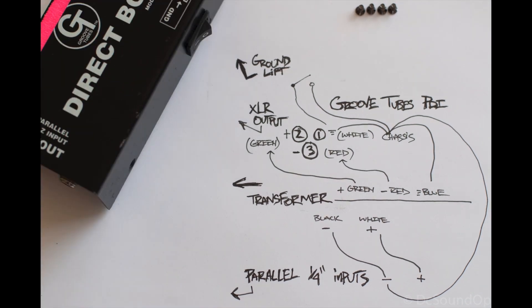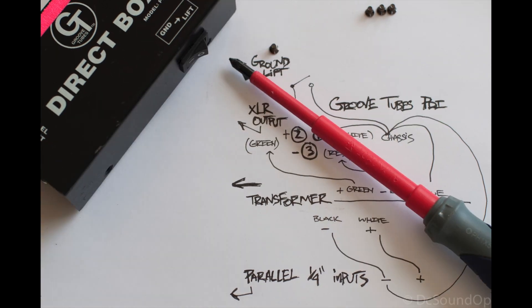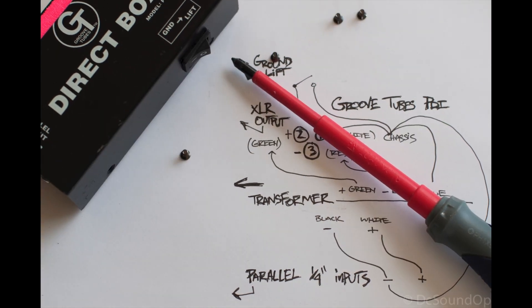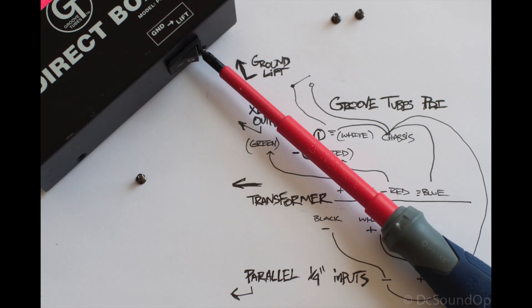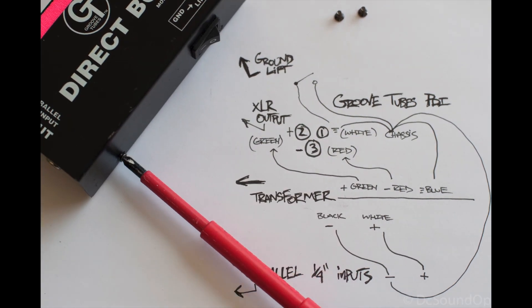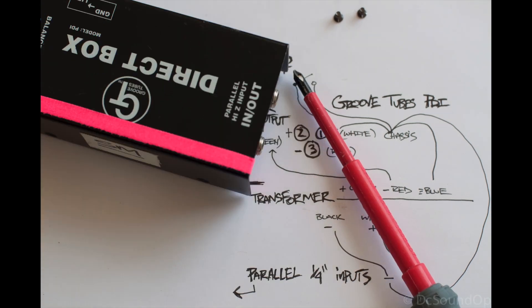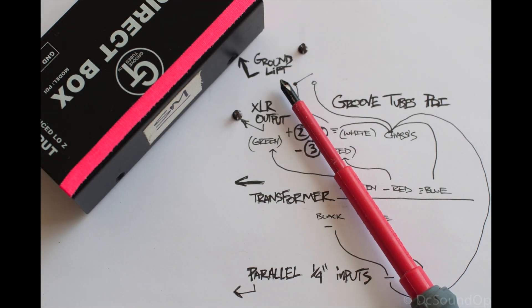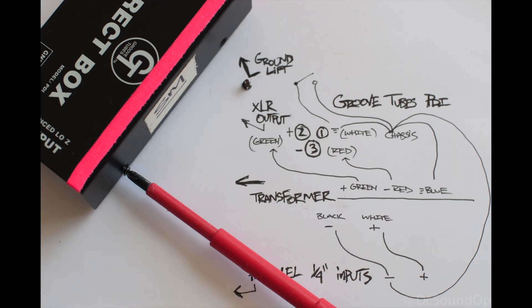Should you be getting noise on your signal here, you always want to try to lift the ground on the audio side, not on the electrical side of things. Those cheater plugs, the two prong cheater plugs are not a solution for solving audio problems. Always lift in a situation like this where you can lift the audio ground.